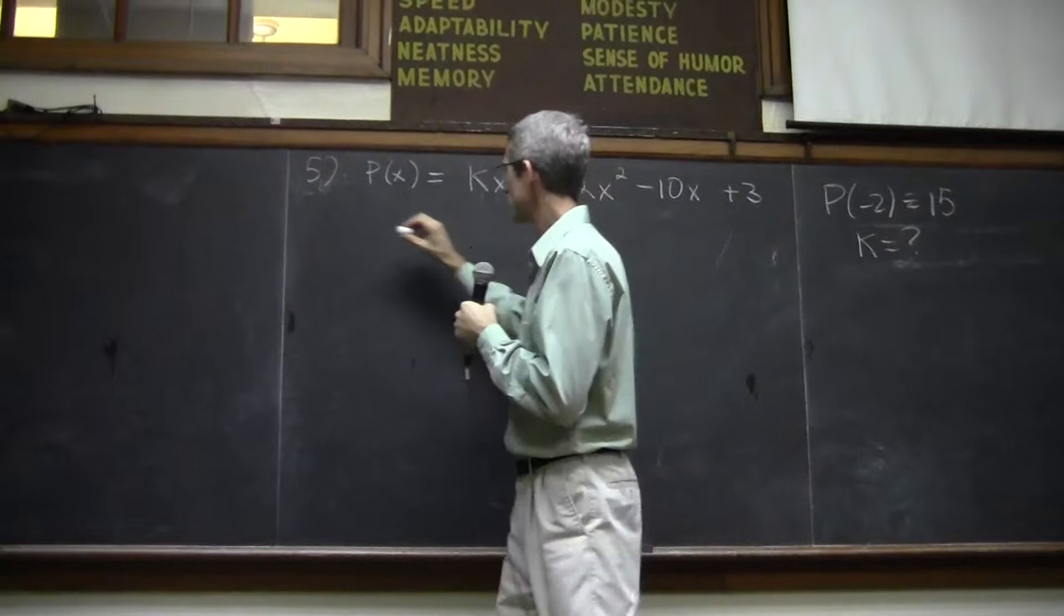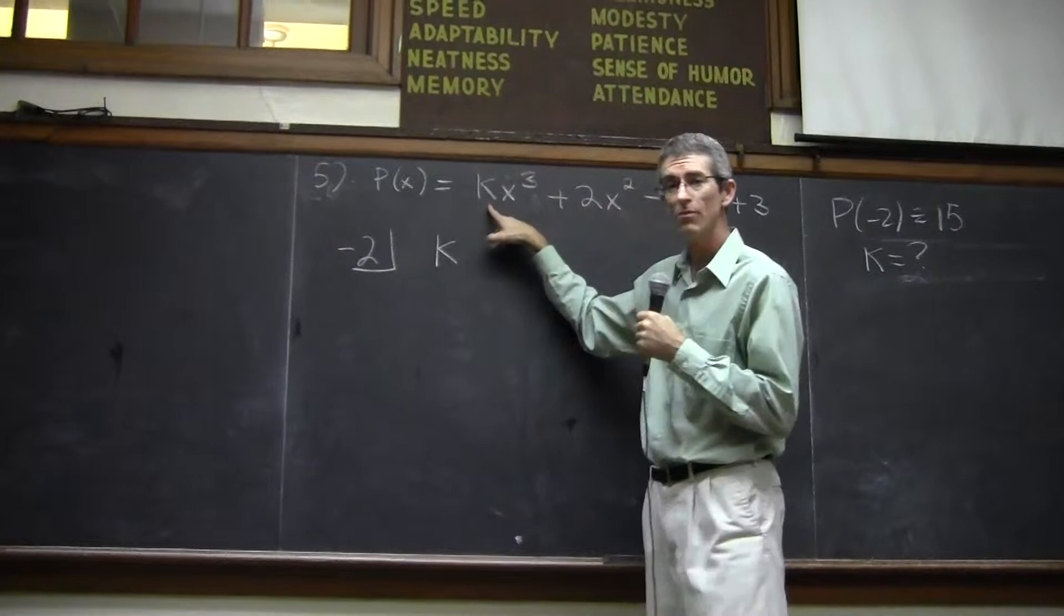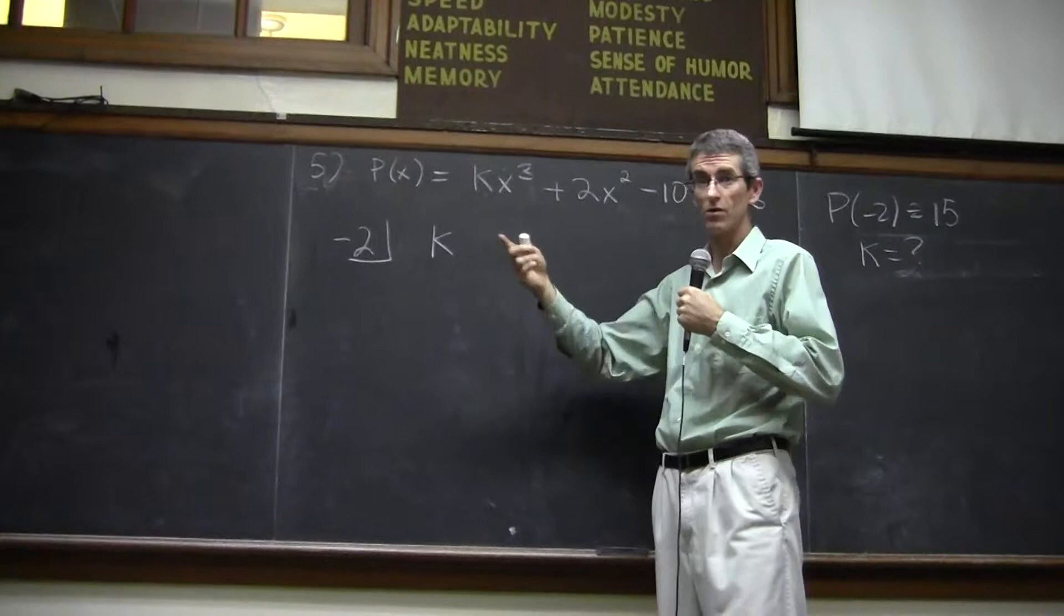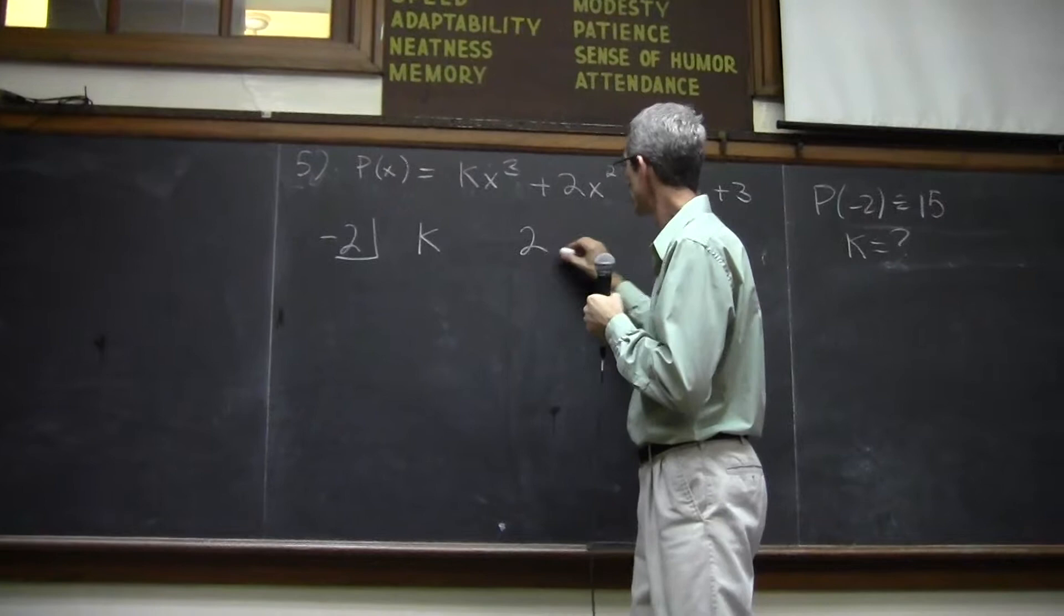So let me start by setting it up, negative 2. Bring down your coefficients. Right there, people were writing just 1. You have to write K. I don't know what that coefficient is. It's a variable. It could be 3, 4, 5, who knows? You just write K. Just put it in there. Don't worry about it. 2, negative 10, and 3.